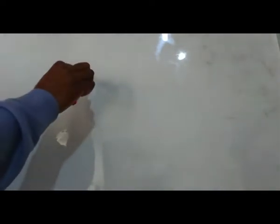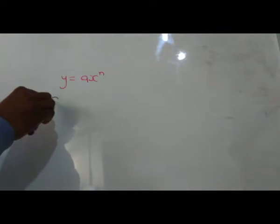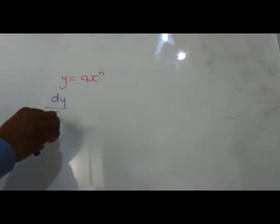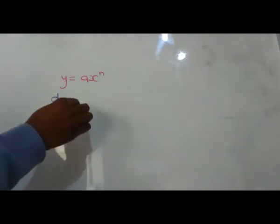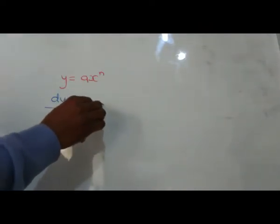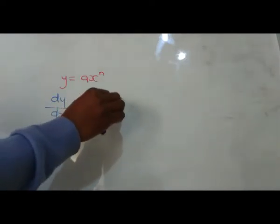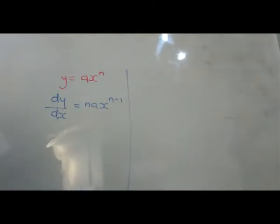The first thing I want to teach you is how to go about it. For example, we are given y equals ax to the power of n. How do you differentiate this? You will say dy over dx, which means the derivative of y with respect to x, will be equal to n times a, which is na, then x to the power of n minus 1. I want you to compare and contrast with what I'm going to write on the other side of the board.